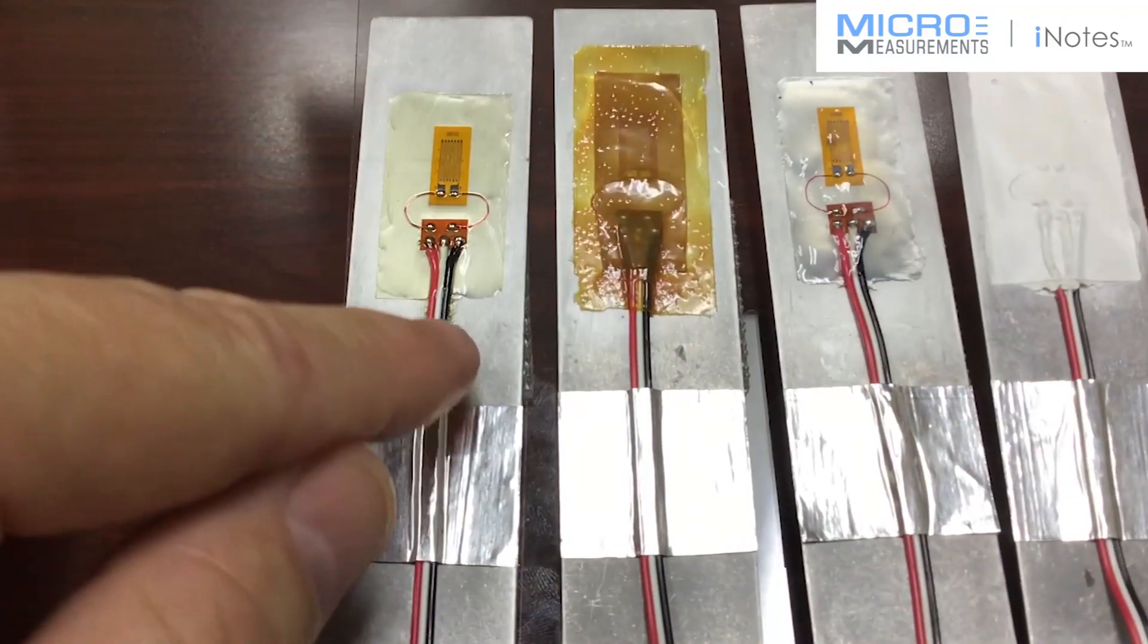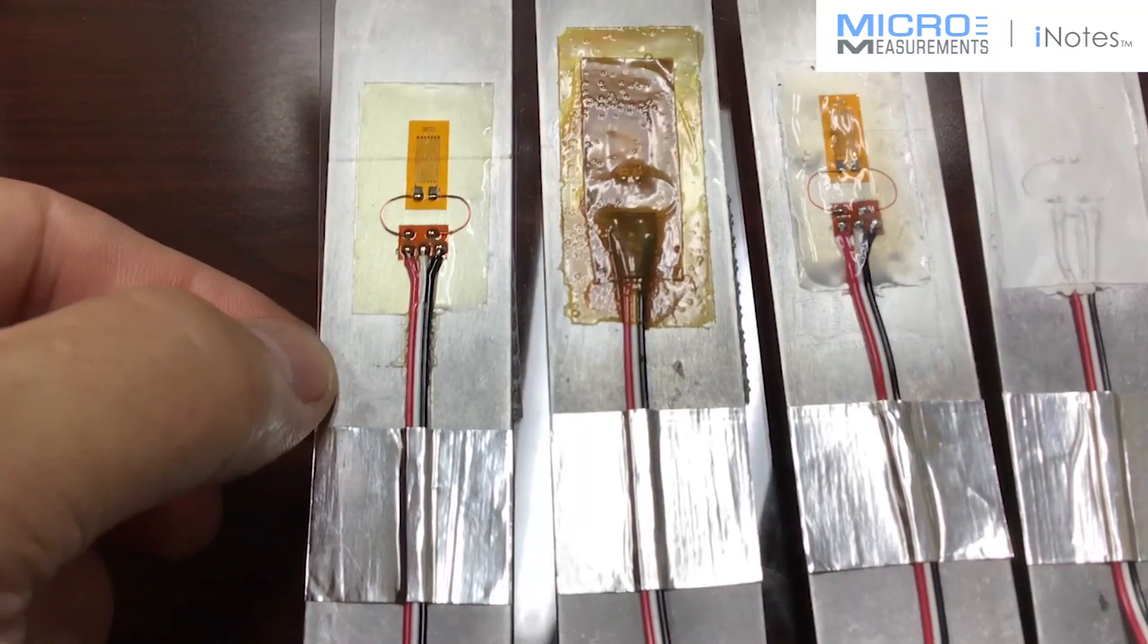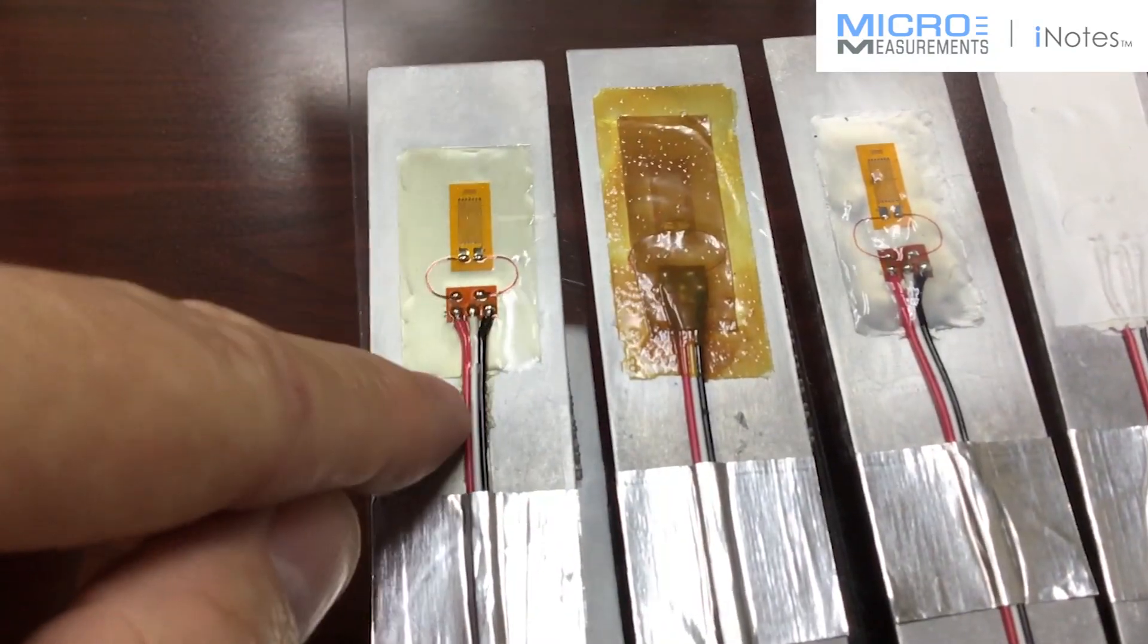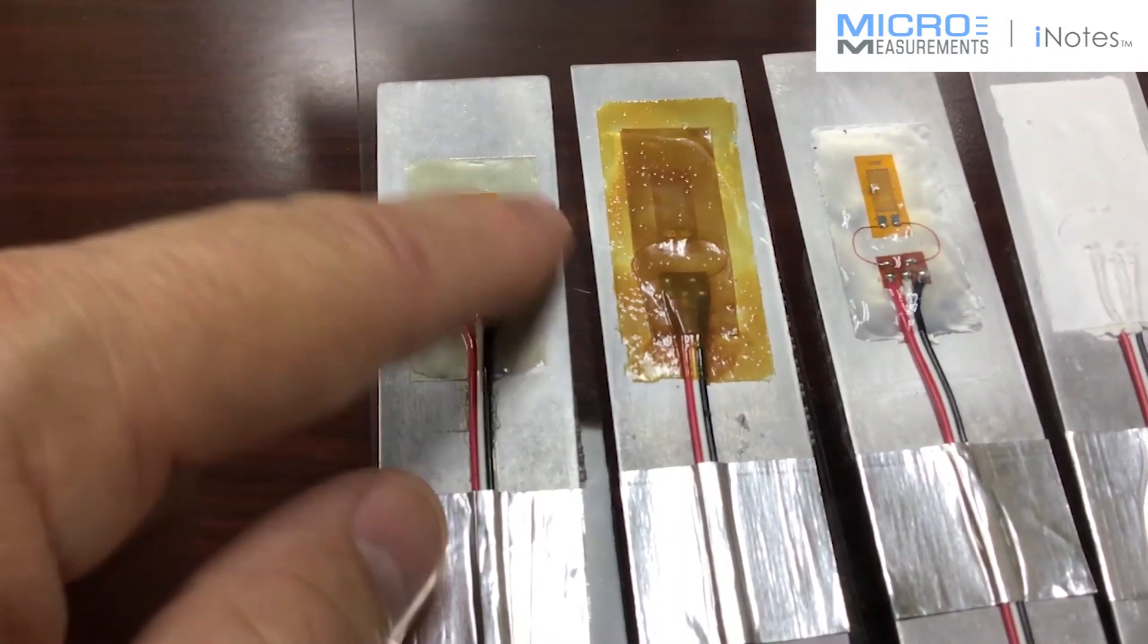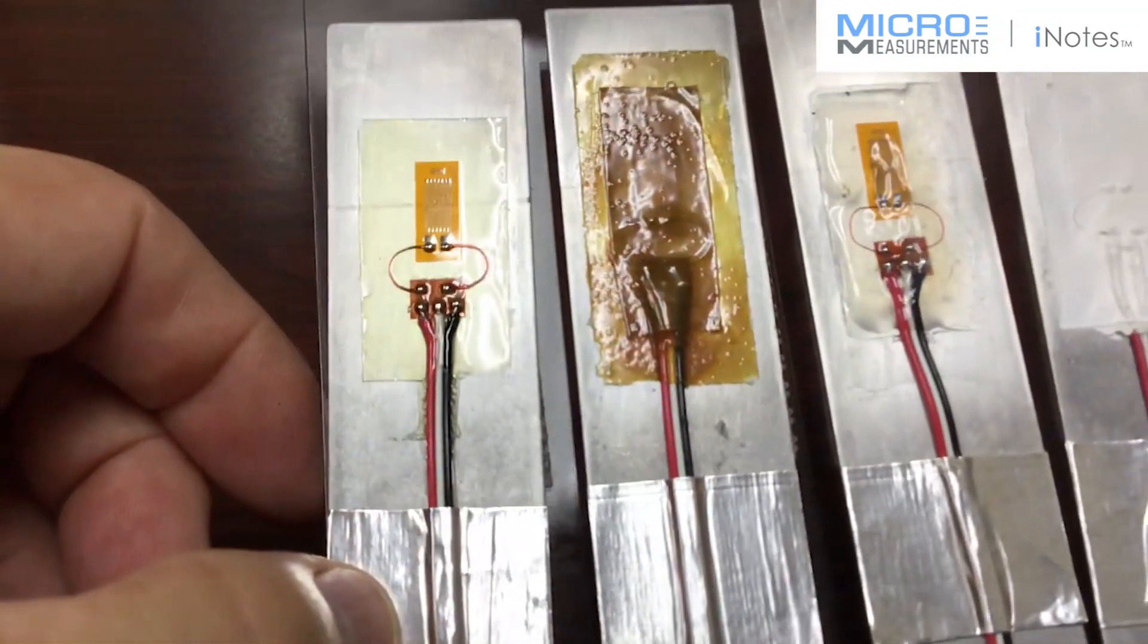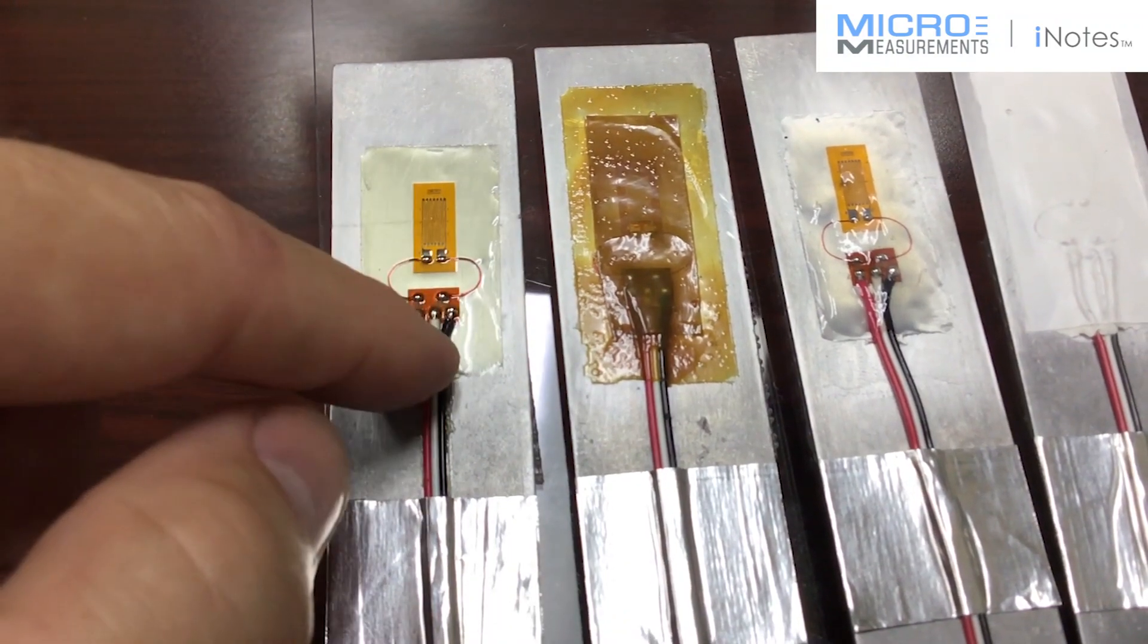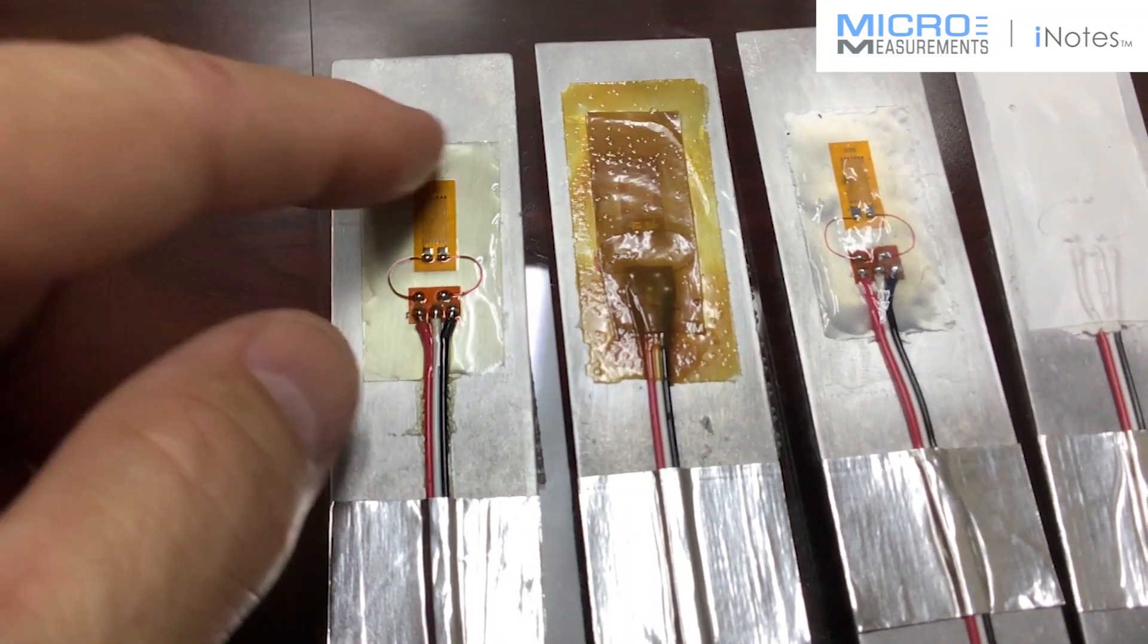The first one is our most common protective coating that gets used for strain gauges. This is the M-Coat A. It's a single component polyurethane protective coating. As you can see in the demonstration sample here, you can easily see through it so you can easily see the strain gauge and the wiring. This provides pretty good laboratory type environmental coating.